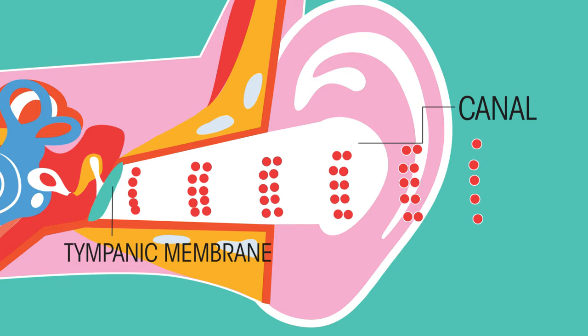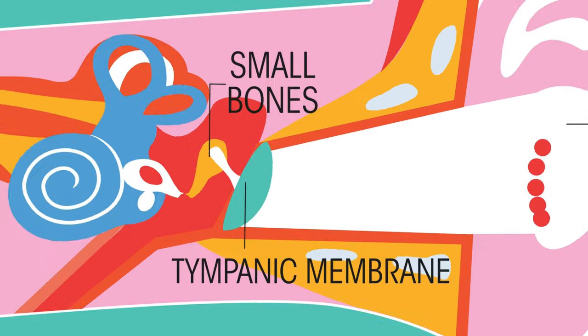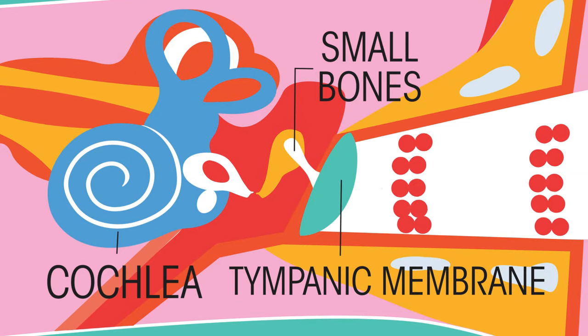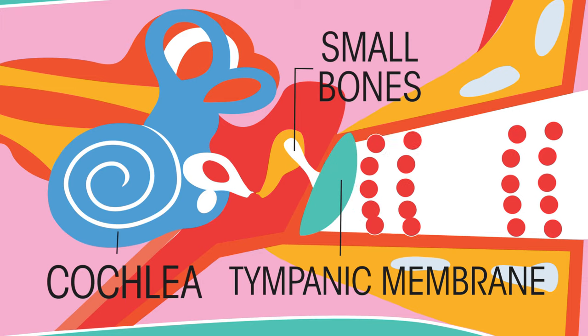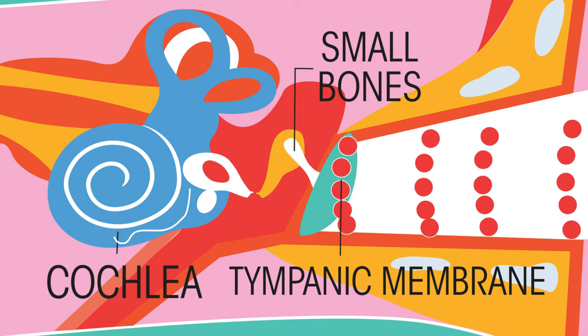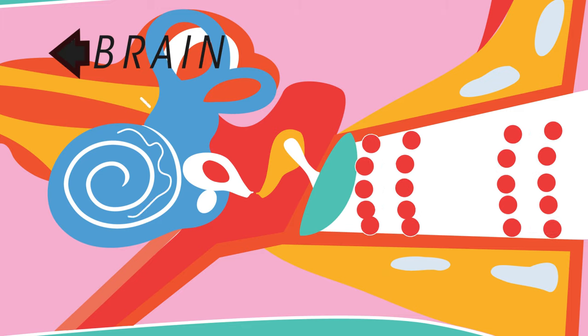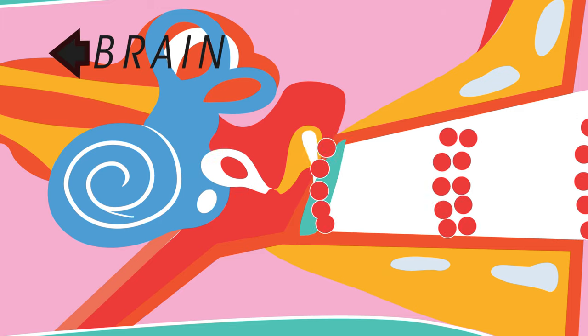From canals, to membranes, to small bones, until the vibrations reach the fluid of the cochlea in the inner ear. The cochlea transforms the vibrating sound waves into electrical impulses, which are sent on to the brain. To learn more about how the ear works, watch this video.